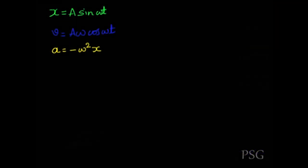Now we can understand the phase relationship between velocity, position, and acceleration. Velocity is Aω·cos(ωt), and since cos(ωt) = sin(ωt + π/2), velocity leads displacement by 90 degrees. Since position is given as a sine function, the velocity and displacement have a phase difference of 90 degrees.